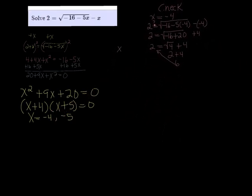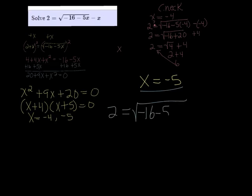Let's see if negative 5 works. So x equals negative 5. So we're going to have 2 equal to the square root of negative 16 minus 5 times negative 5 minus a negative 5. Again, this is a question. Does it equal? Do both sides equal?